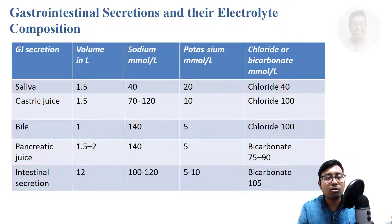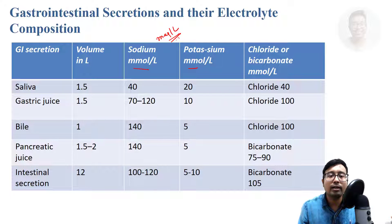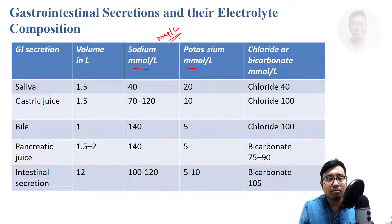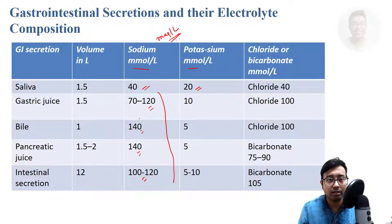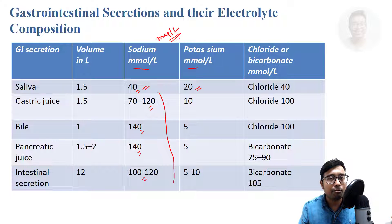The concentration of any ion is expressed in either millimole per litre or milliequivalent per litre. You don't need to remember each and every exact value, but what you need to know is that the concentration of potassium is highest in saliva compared to any other body fluid, and the concentration of sodium is lowest in saliva compared to any other body fluid.